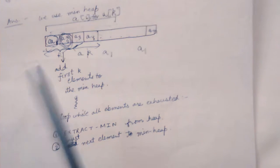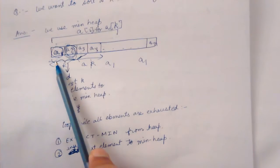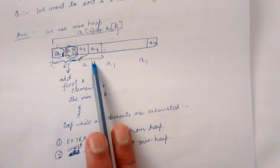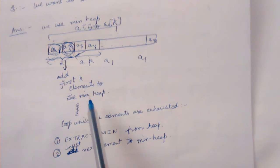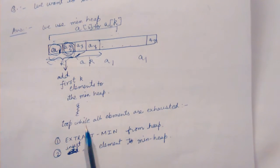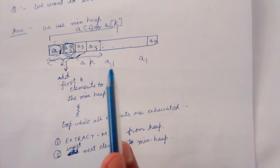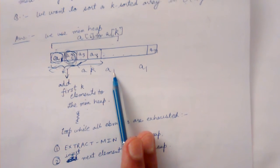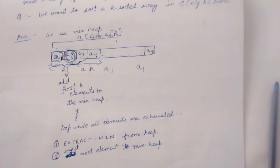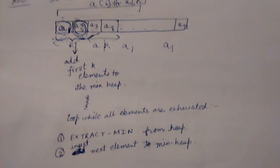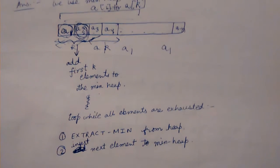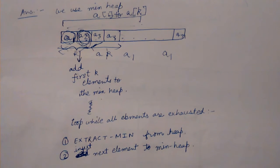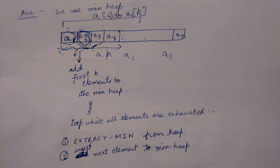So how do we sort it? Let's look at the algorithm. First, we construct a min heap out of the first k elements — we consider the first k elements and build a min heap from them. This takes O(k) time, because constructing a heap takes O(n) time in general, so a heap of size k can be created in O(k) time.